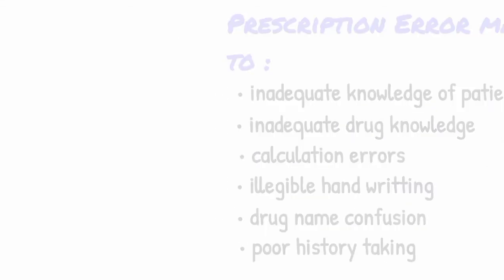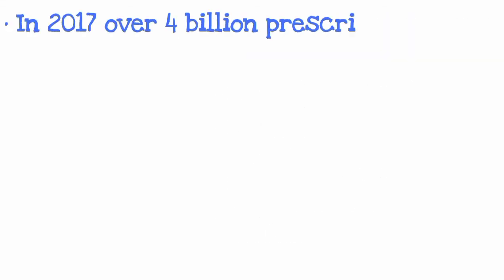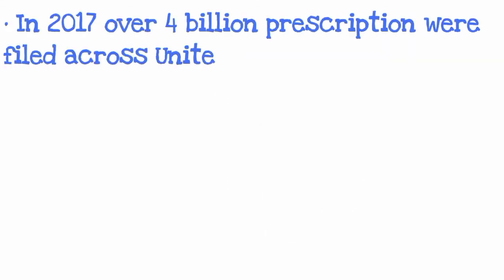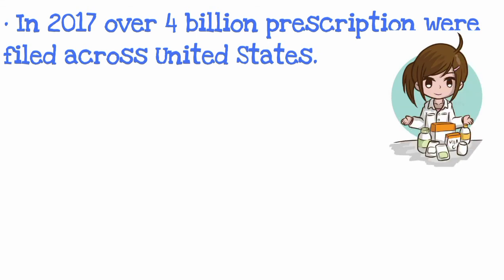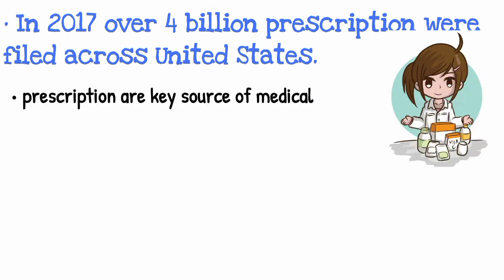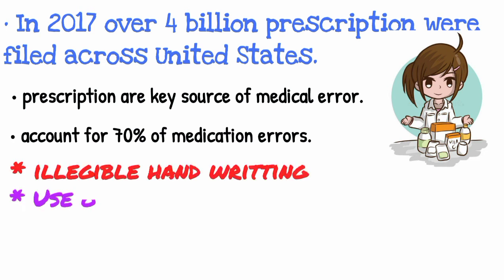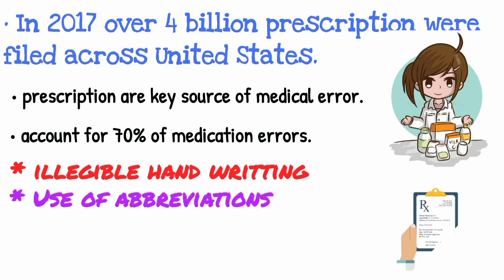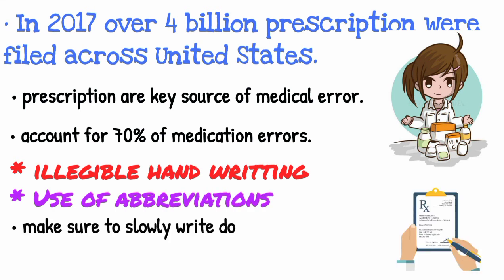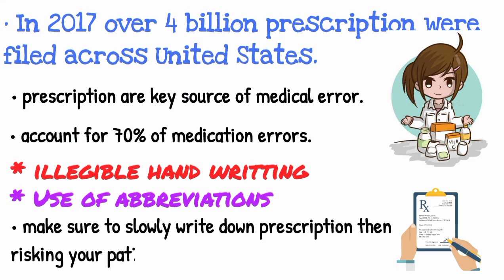In 2017, over 4 billion prescriptions were filed at pharmacies across the United States. Given their sheer prevalence, prescriptions are a key source of medical errors — in fact, prescription errors account for 70 percent of medication errors. The two most common sources of prescription error are illegible handwriting and the use of abbreviations. Always make sure to write out a legible prescription rather than risk your patient's health.